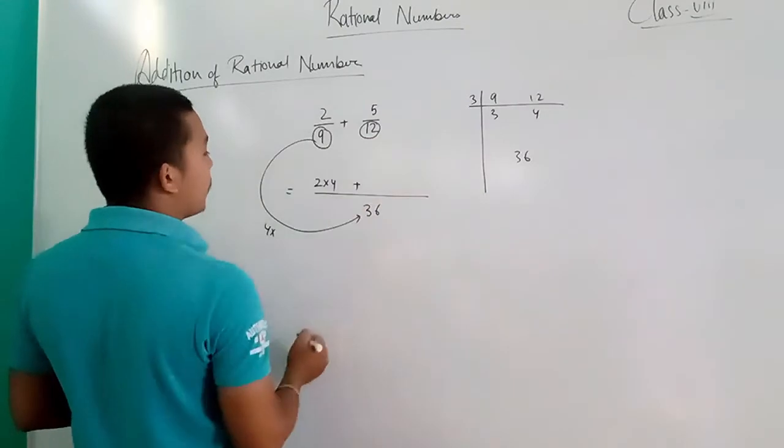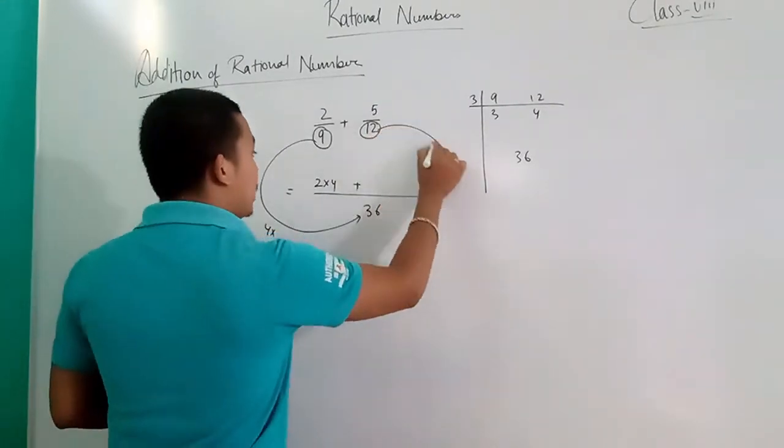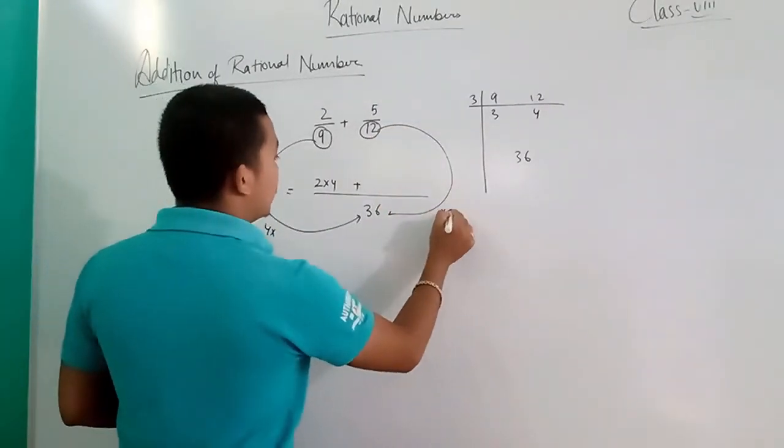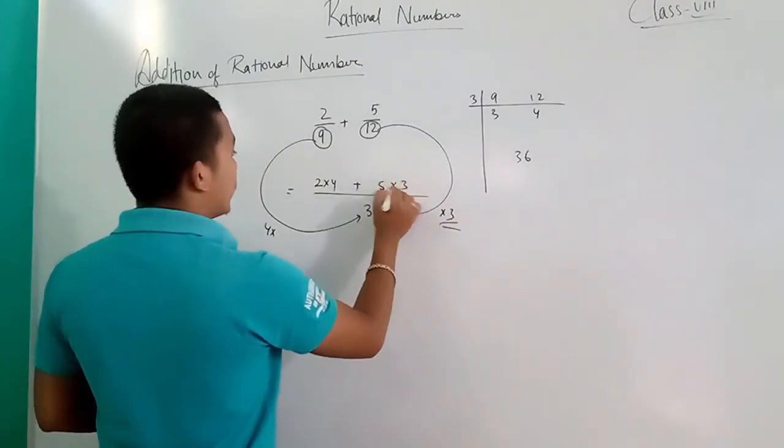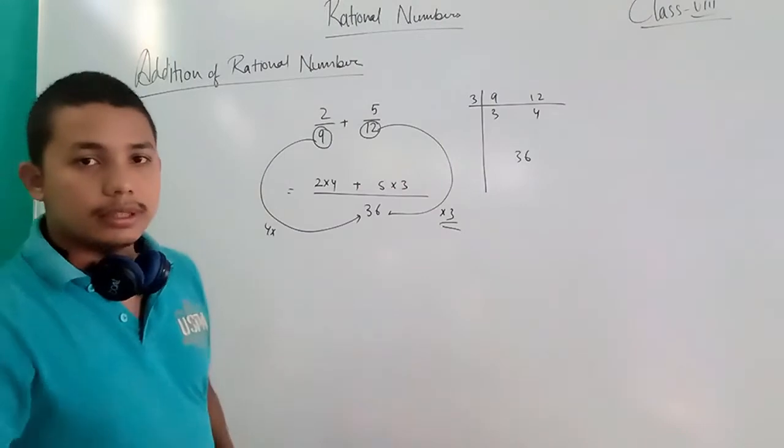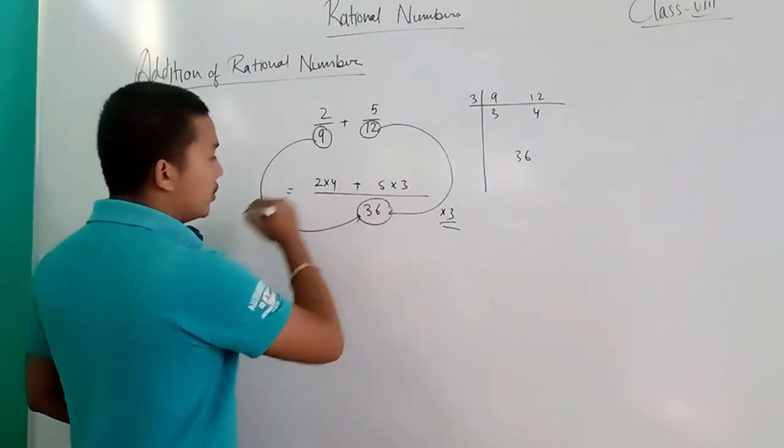Plus, another plus value here. Next, 12 goes into 36, into 3. This 3 will multiply by 5.